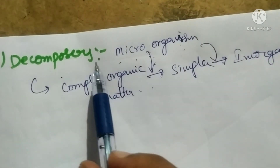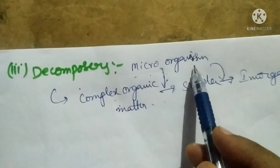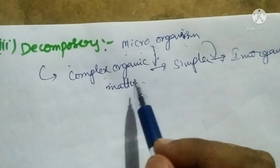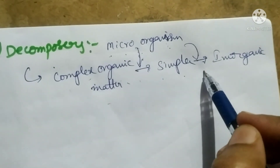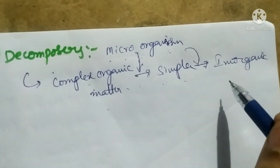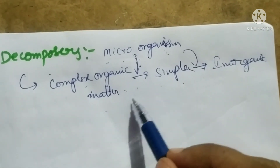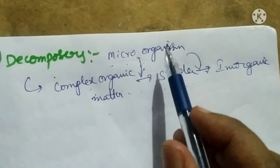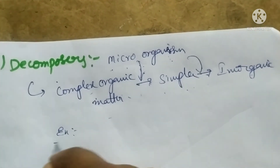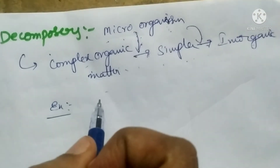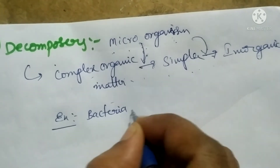Decomposers are microorganisms that break down complex organic matter into simple organic matter and finally convert it into inorganic matter. For example, dead bodies of animals, plants, and microorganisms are broken down — complex molecules are converted into simple molecules to return nutrients. Examples of decomposers are bacteria and fungi.